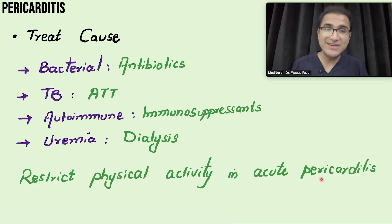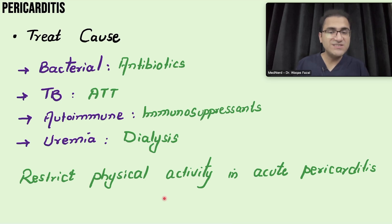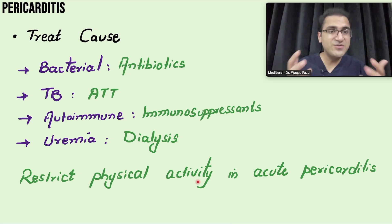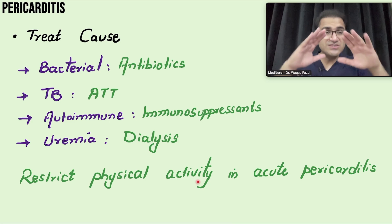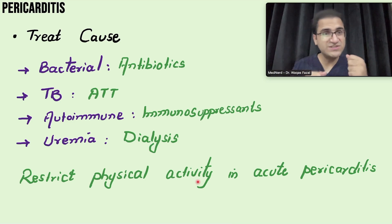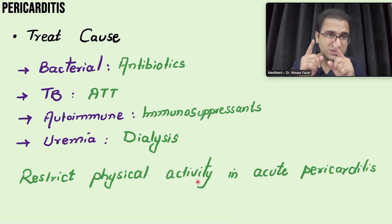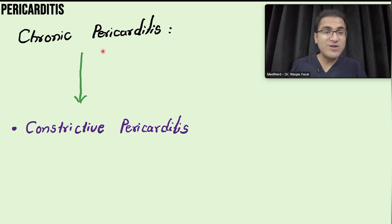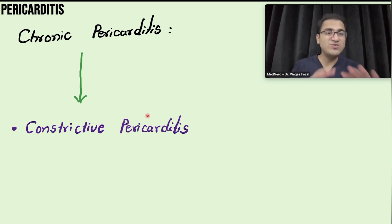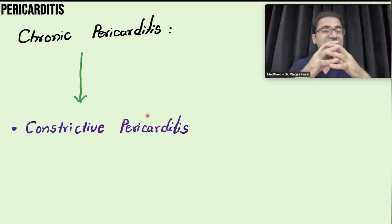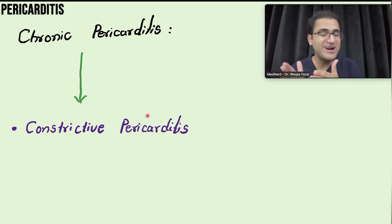Physical activity should be restricted in acute pericarditis. The patient should rest until inflammation has resolved — until CRP levels have normalized and acute pain has gone. Physical activity increases cardiac workload, worsening inflammation and slowing healing. Chronic pericarditis, defined as pericarditis lasting greater than three months, can result in constrictive pericarditis, where the pericardium becomes stiff and rigid and does not allow the heart to relax properly.